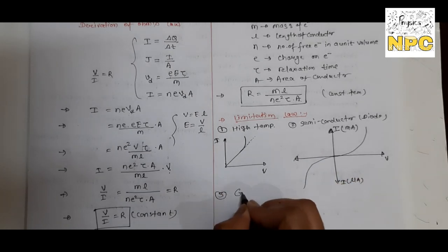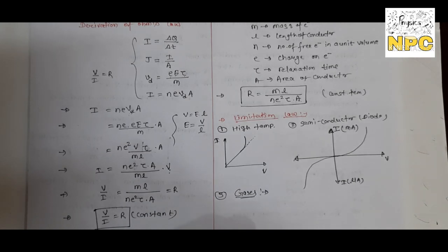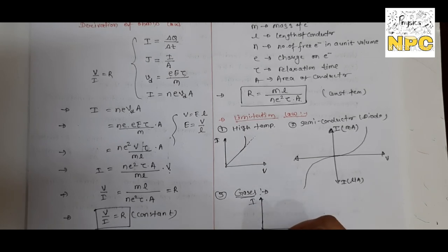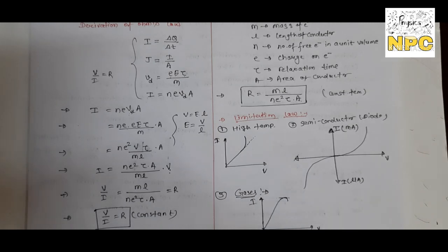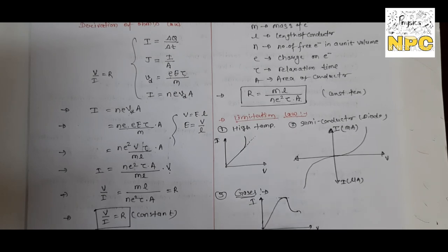Third limitation: for gases. If you plot the voltage vs current graph for gases, it initially increases, reaches a high value, and then decreases. This non-linear behavior means gases also do not follow Ohm's Law. These are the limitations of Ohm's Law.